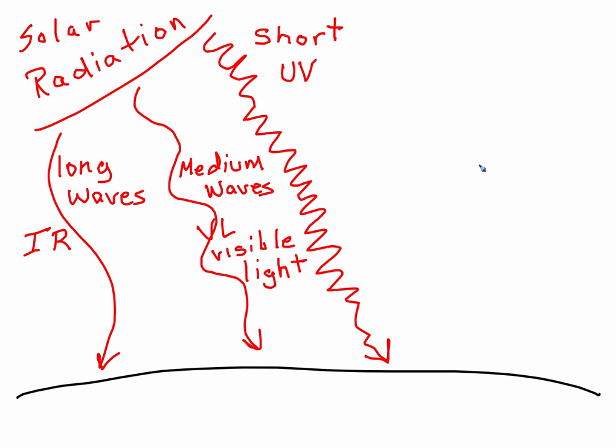And medium waves are visible light. So take a moment and get this little sketch down that shows the different types of wavelength. And while you're getting that down, short waves, ultraviolet waves, you cannot see.